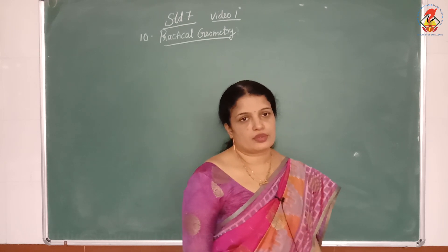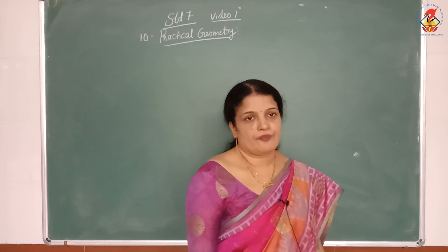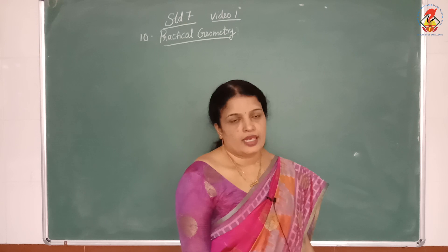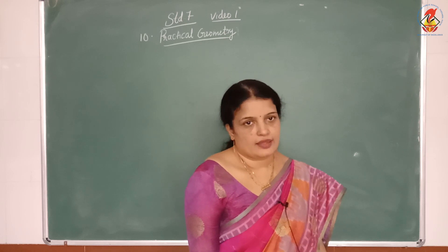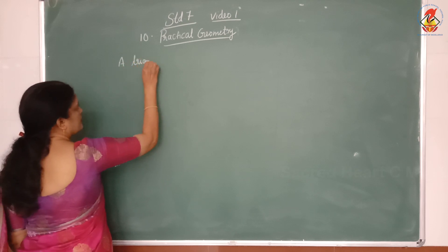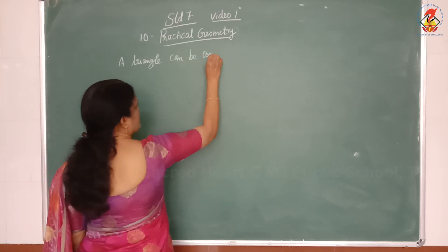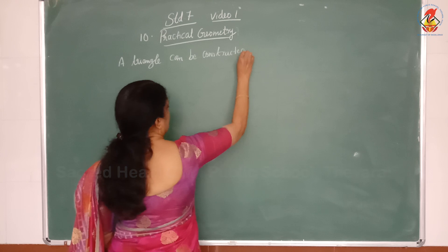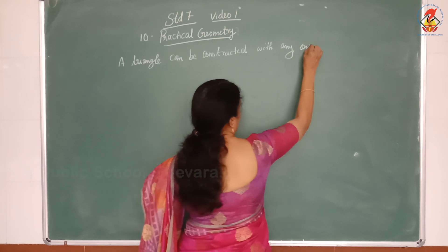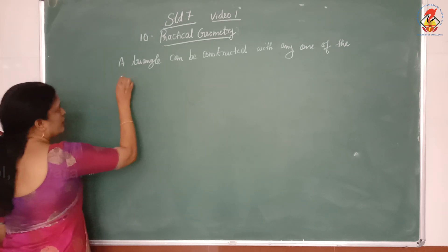The second condition is two sides and the angle between them. The third is two angles and the side between them. The fourth is a hypotenuse and a leg in the case of a right angle triangle. These are the four conditions for constructing a triangle.